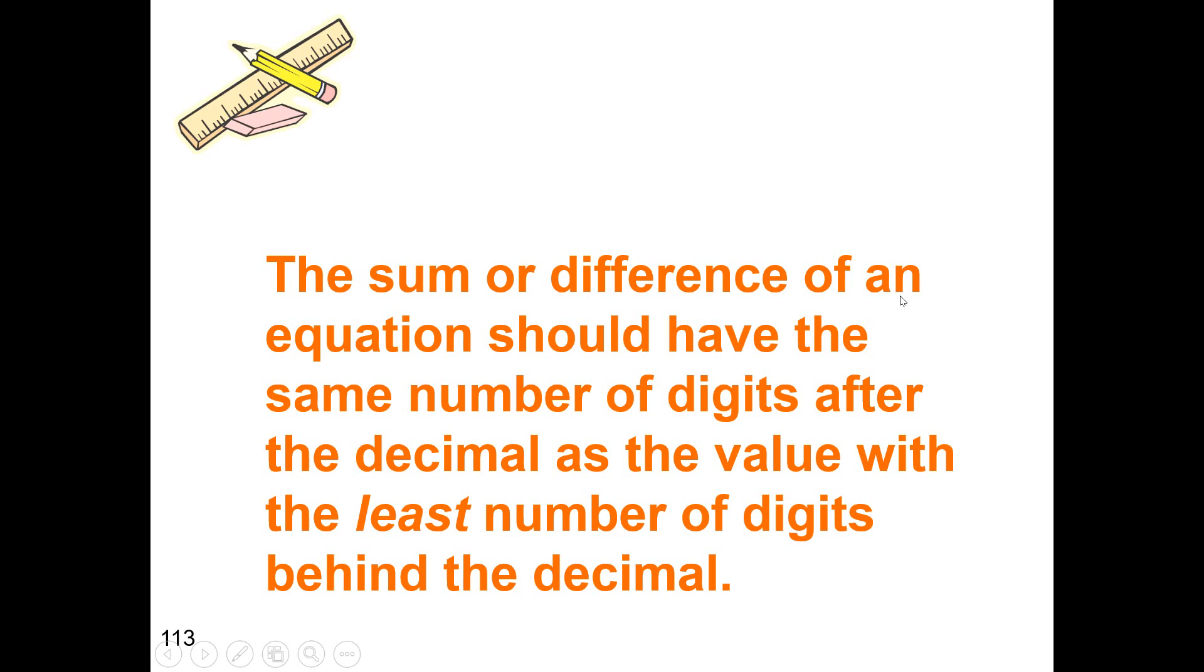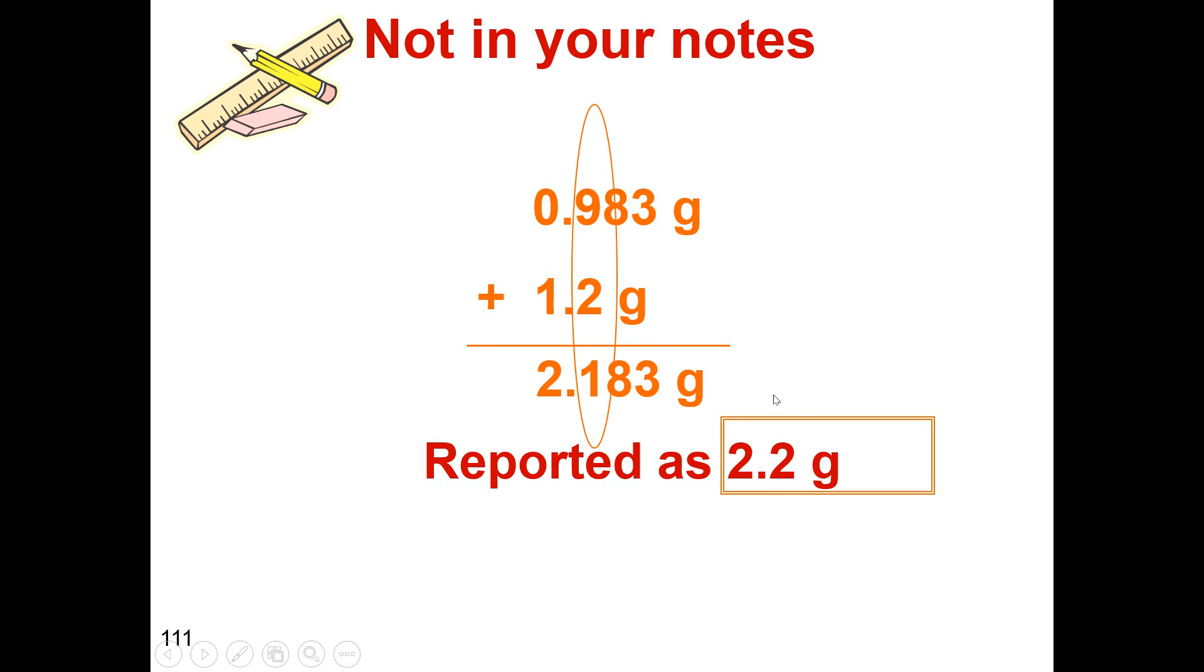So the sum or difference of an equation should have the same number of digits after the decimal as the value with the least number of digits behind the decimal. Now I'm going to go ahead and give you a warning. We're kind of taking the easier problems that involve decimals when it comes to adding and subtracting. We could actually get some really difficult problems involved with adding and subtracting, but we're going to try to keep it simple. So we're not complicating things. If you do decide to reach out to additional resources to learn about adding and subtracting sig figs, you might run into some really difficult problems that might confuse you. So I just want to give you that heads up early.